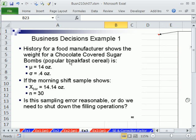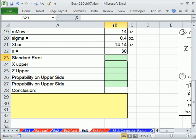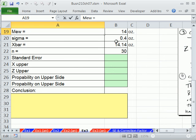History for our food manufacturer shows that the weight for chocolate-covered sugar bombs, a popular breakfast cereal, is the population mean is 14 ounces. Population standard deviation is 0.4 ounces. Now if the morning shift sample shows, we go out and take a sample, x bar equals 14.4 ounces, and our sample size was 30. The question is, is this sampling error reasonable? Remember, because the sample is different than the population mean, this could be a sample error, or maybe it's really telling us something. So the question is, is the sampling error reasonable, or do we need to shut down the filling operations and adjust the machine? And manufacturers do this all the time. Let's do some calculations. There's also a hand-drawn version over here also.